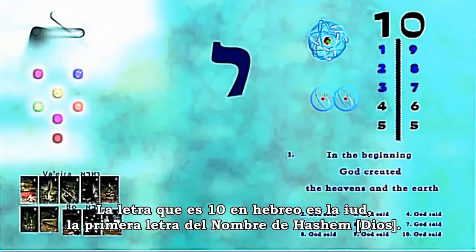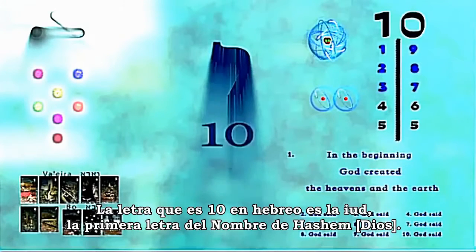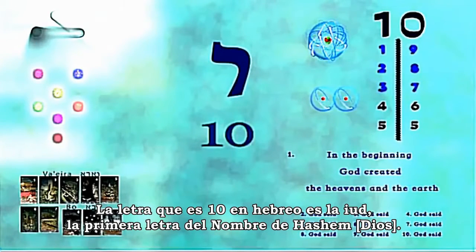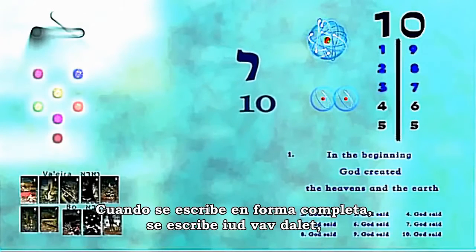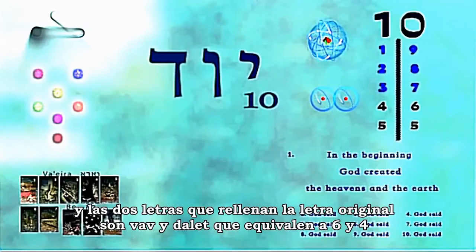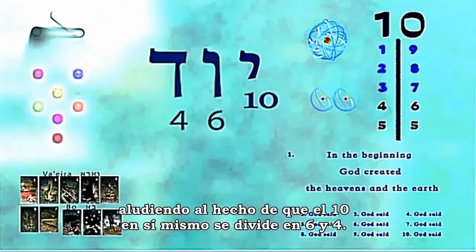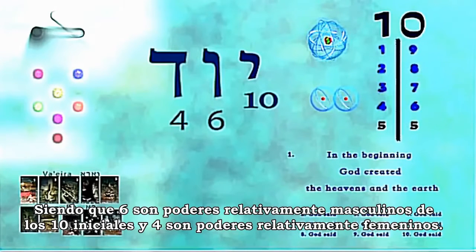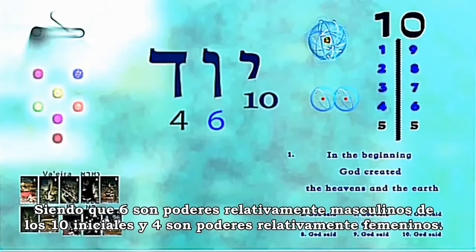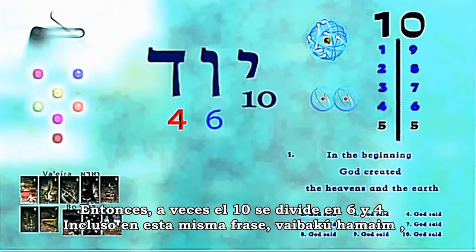The letter which is ten in Hebrew is the letter Yud — the first letter of Hashem's name. When it is written in full, it is written Yud, Vav, Dalet. The two letters that fill the original letter are Vav and Dalet, which equal six and four, alluding to the fact that the ten itself splits into six and four. Six are the relatively male powers of the ten, and four are the relatively female powers of the ten.